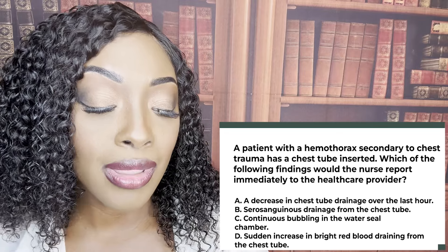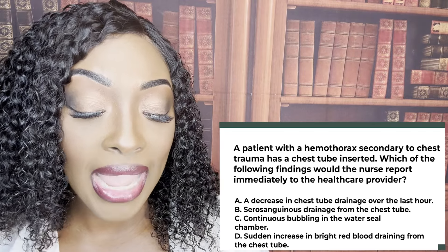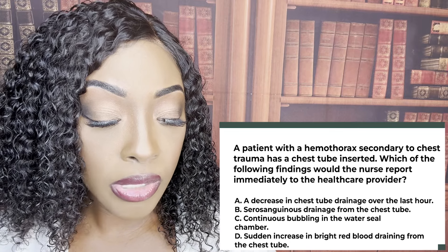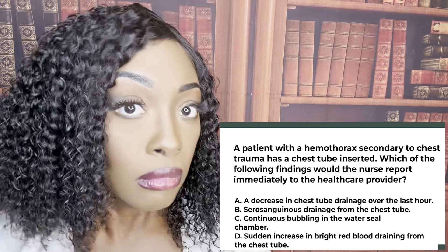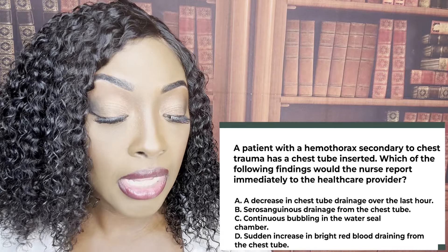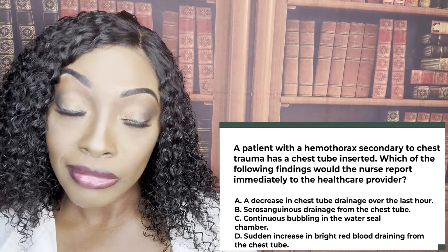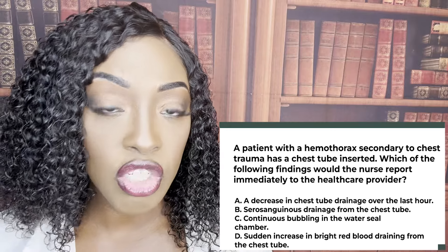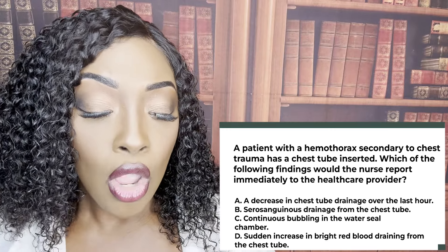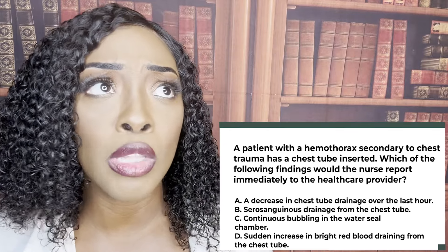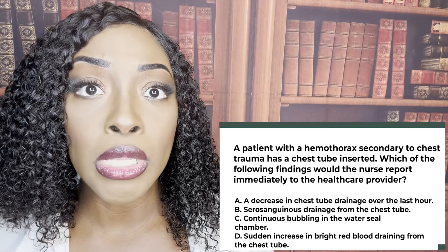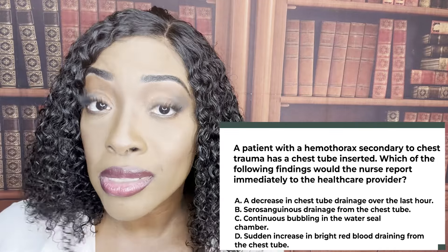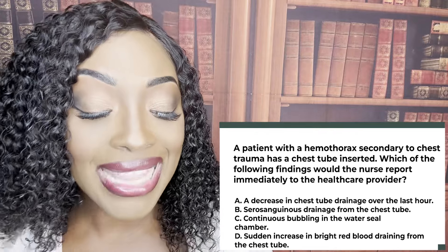The wrong answers: A, a decrease in chest tube drainage — we actually want drainage to gradually become less; keep monitoring, but you'd still do an assessment before calling the provider. B, serosanguinous drainage — that's what we want to see; keep monitoring. C, continuous bubbling in the water seal chamber — that suggests an air leak and is not good, but you'd assess the tubing first rather than calling the provider immediately. D is correct because bright red blood indicates active bleeding, and the patient has a sudden change for the worse.